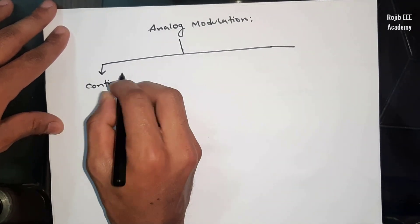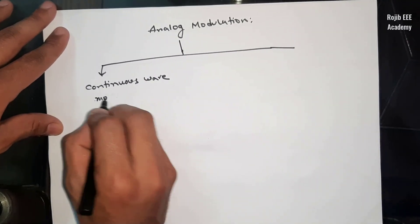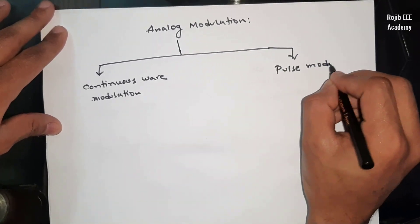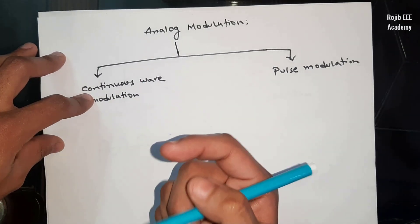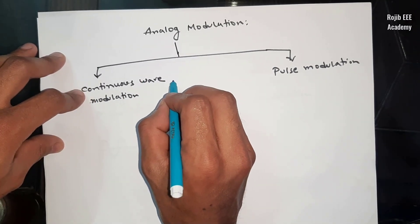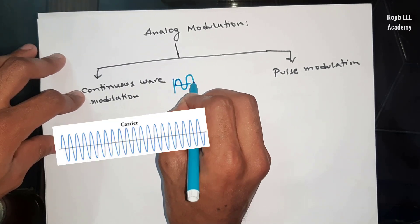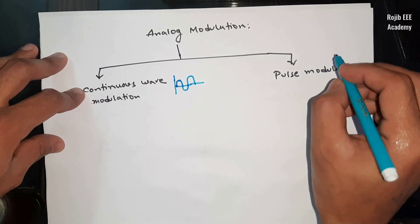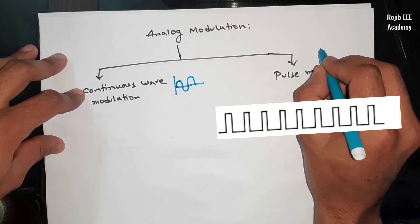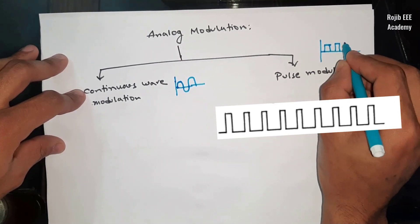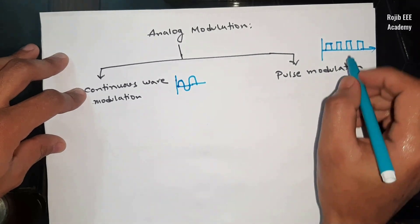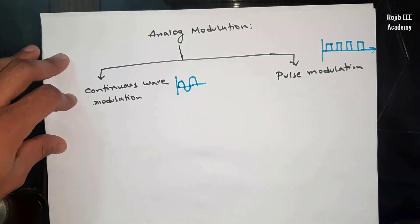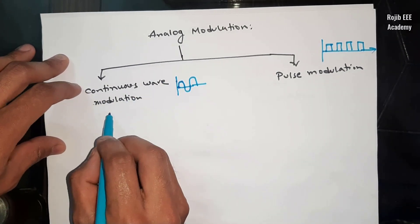Continuous-wave modulation uses a continuous sinusoidal carrier wave. Pulse modulation uses a pulse train as the carrier. So we have continuous-wave modulation and pulse modulation as the two main divisions.